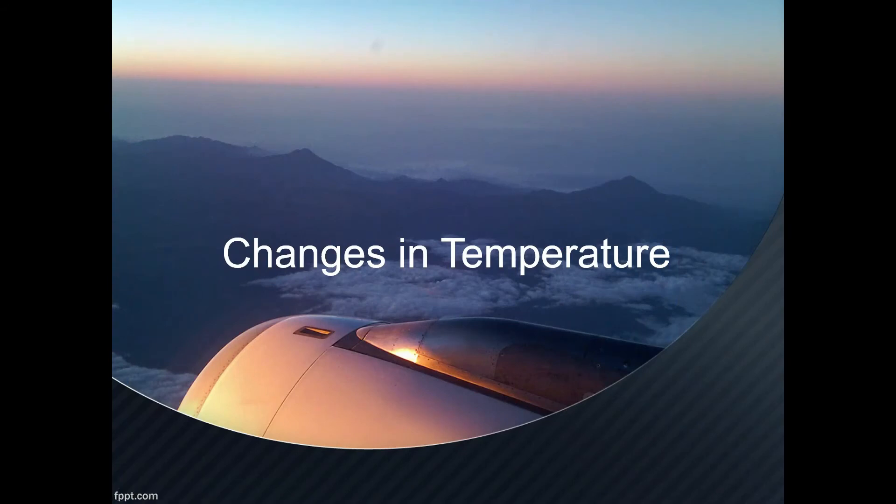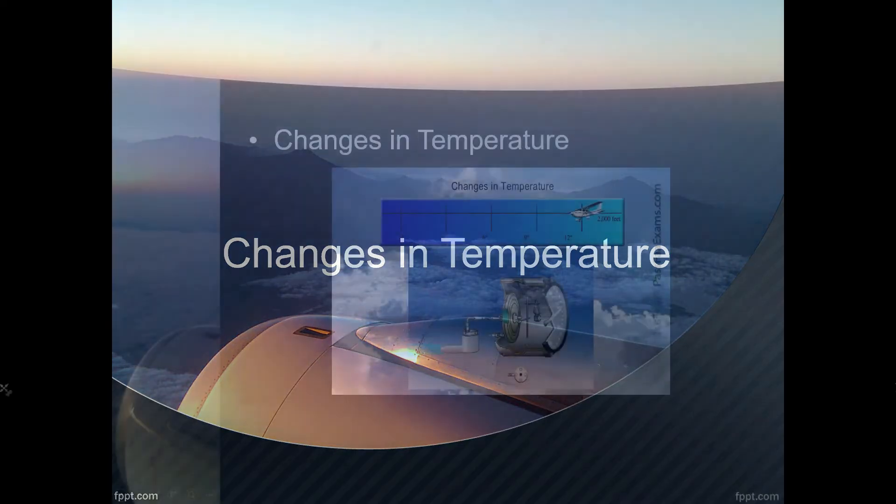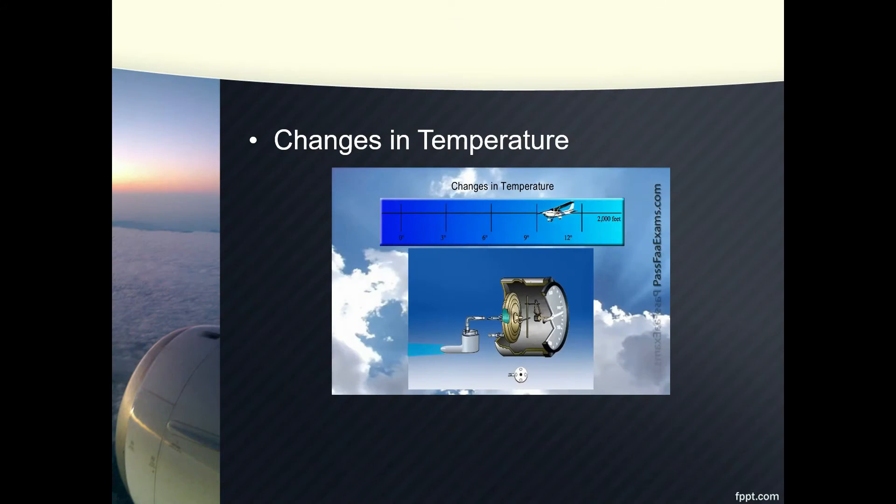The Airspeed Indicator is affected only by changes in temperature and not in pressure. As you probably know, colder air is much denser, and as you can see from the animation, as you fly into colder air, the denser air exerts a bigger force on the diaphragm and therefore it expands more. This obviously affects the reading on the dial. The colder the air, the higher the indicated airspeed, while your real speed is actually lower. Vice versa, the warmer the air is, the lower the indicated airspeed, while your true airspeed is actually higher.